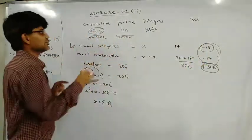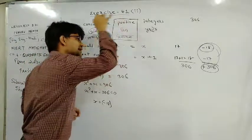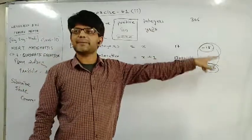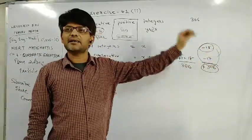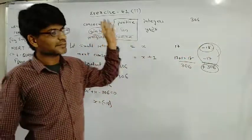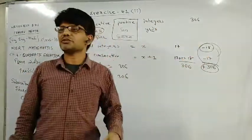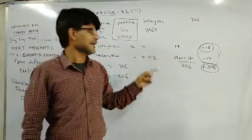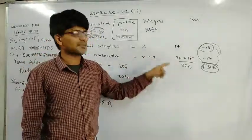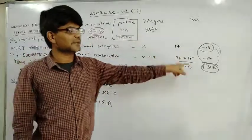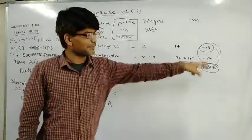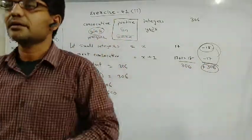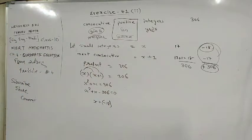But negative 18 cannot be our x because in the question it is given positive dhanatmak or dhan integers. So we will reject this. In the question it is given positive number but this is negative, so it is not our solution. So we will take the solution x equals 17 and the next integer x plus 1 equals 18, and the product is 17 multiply 18 equals 306, which we can verify. Our question has this condition, so based on that condition we get the final answer.